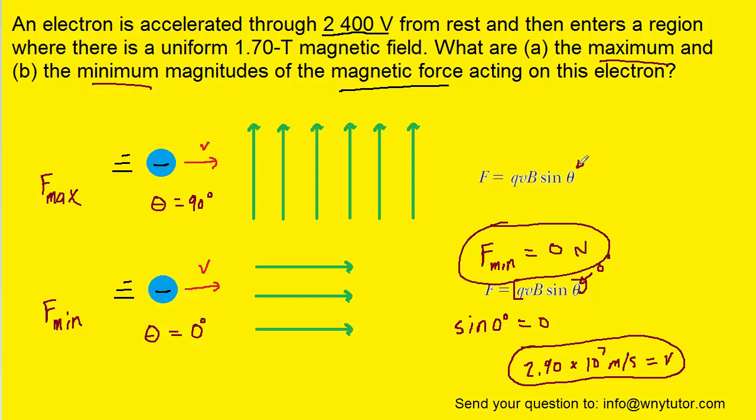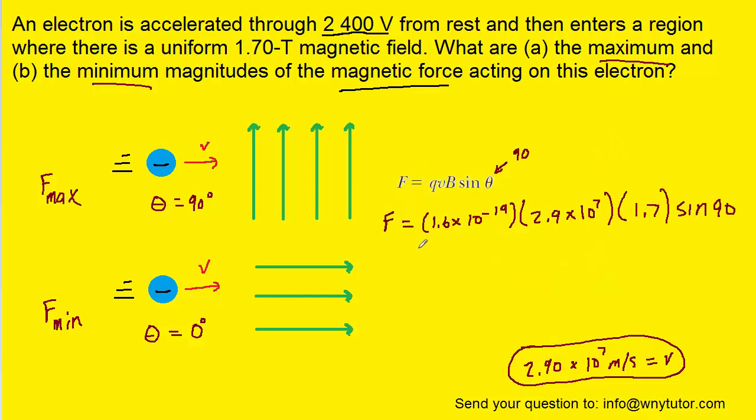For part A, we're going to plug in 90 degrees, because that will yield the maximum force. So here all of the known values are plugged in. We have the charge of the electron, 1.6 times 10 to the minus 19th Coulombs. The velocity that we calculated earlier is plugged in. The magnetic field strength in Tesla, which was given to us earlier in the question.